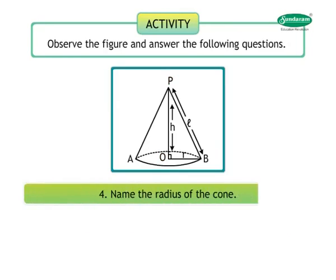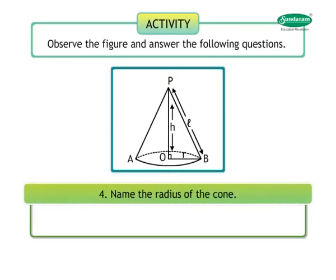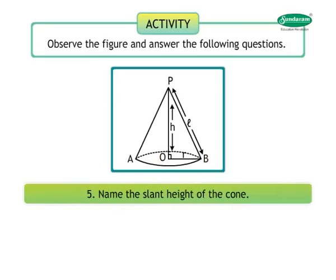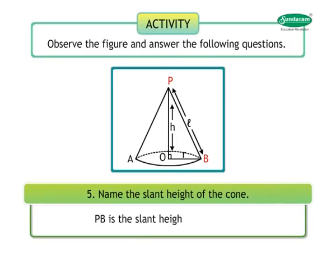Question 4: Name the radius of the cone. Answer: OB is the radius of the cone. Question 5: Name the slant height of the cone. Answer: PB is the slant height of the cone.